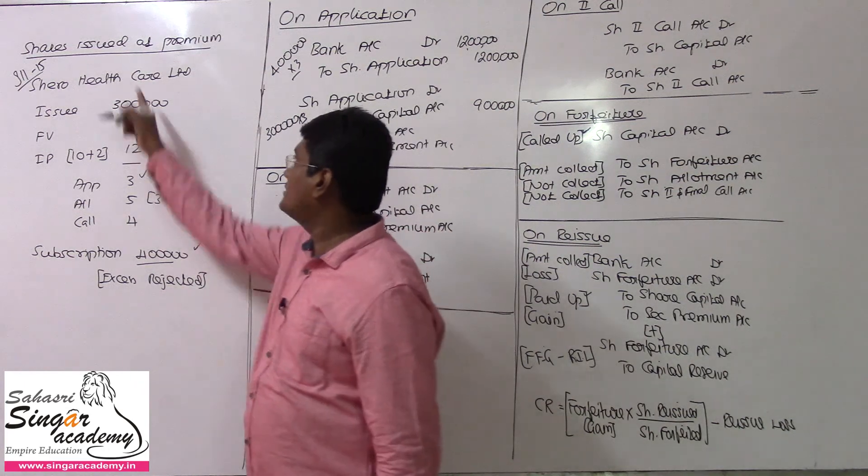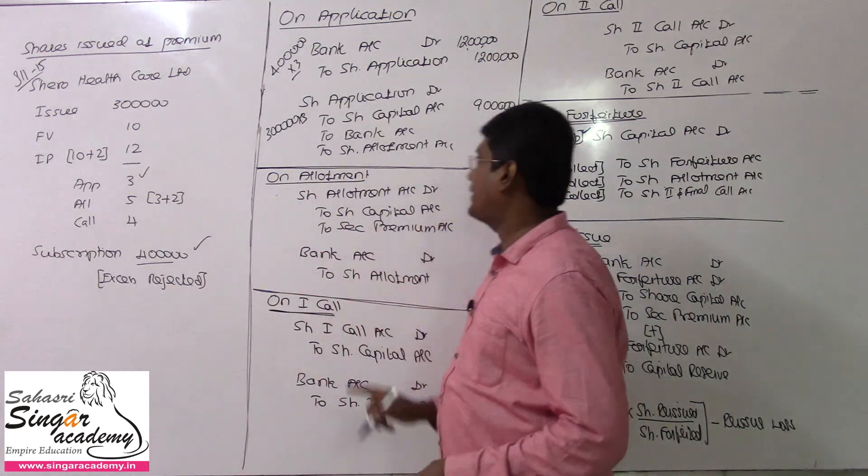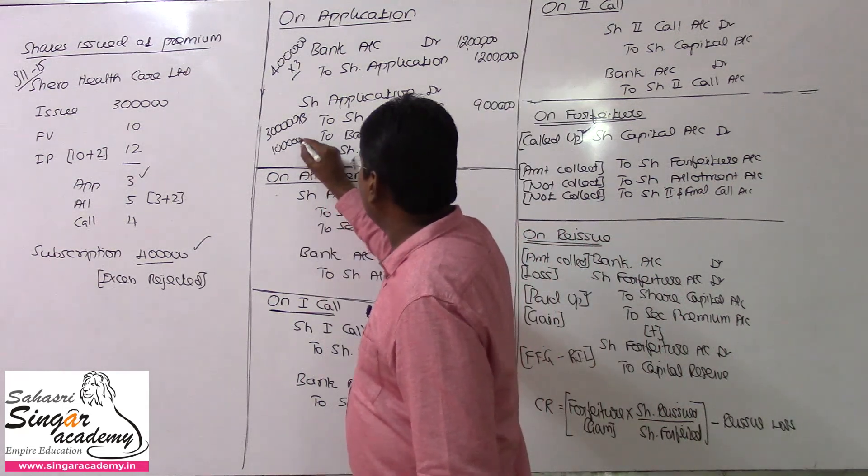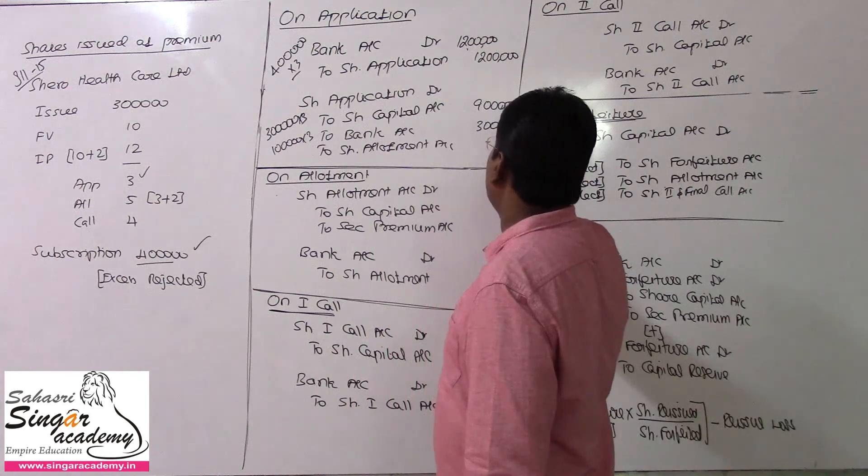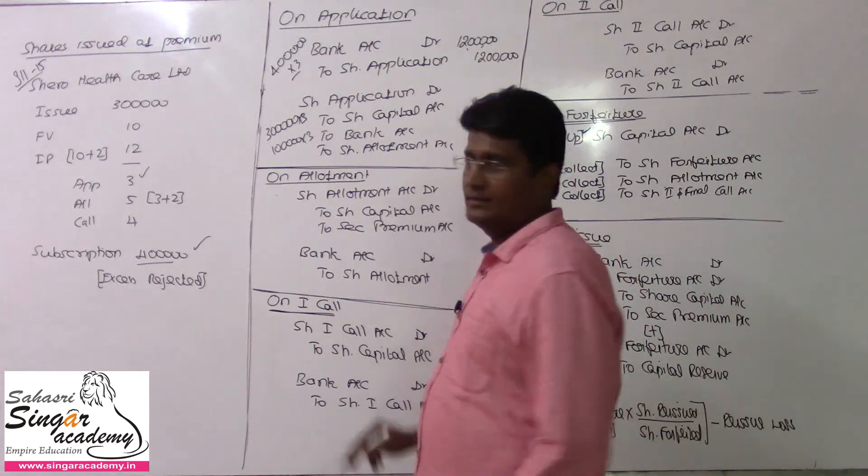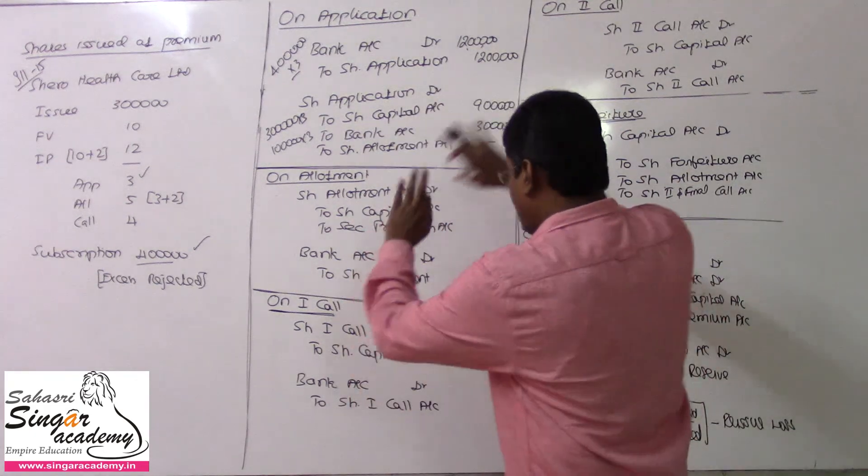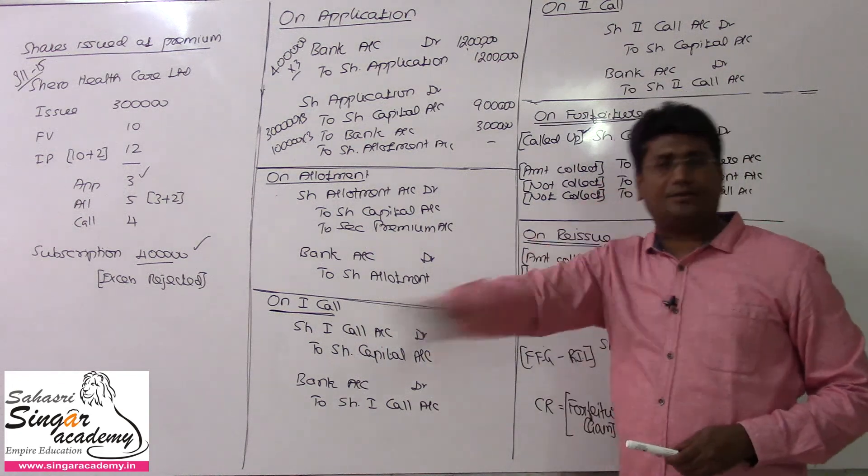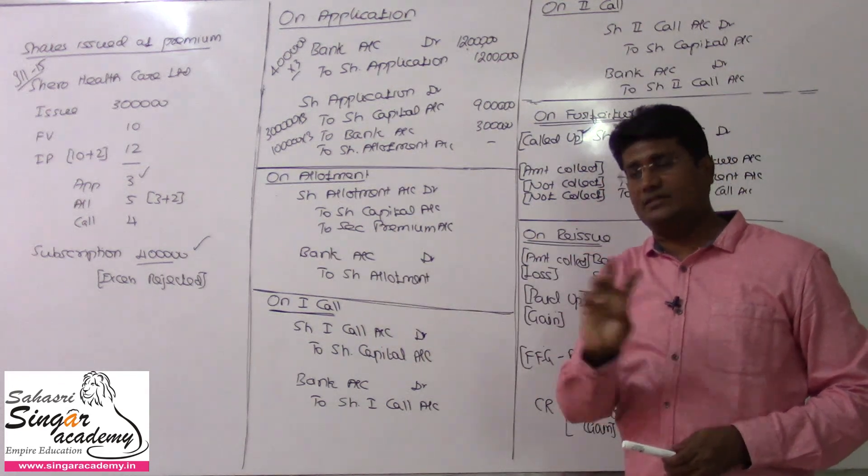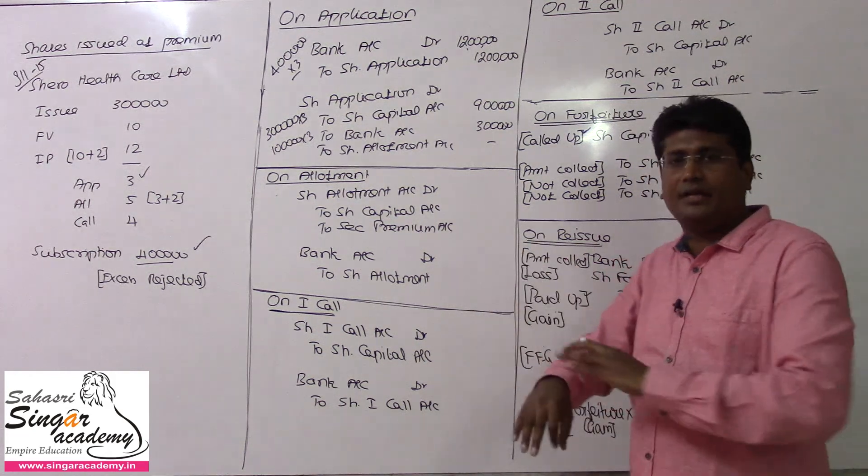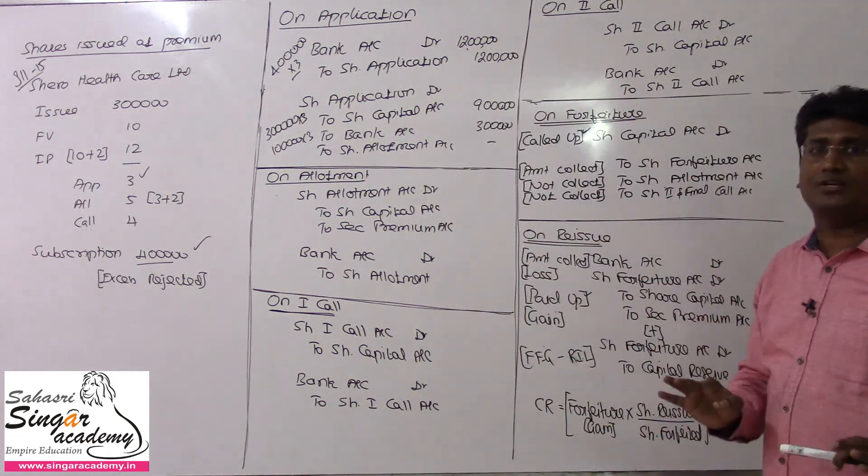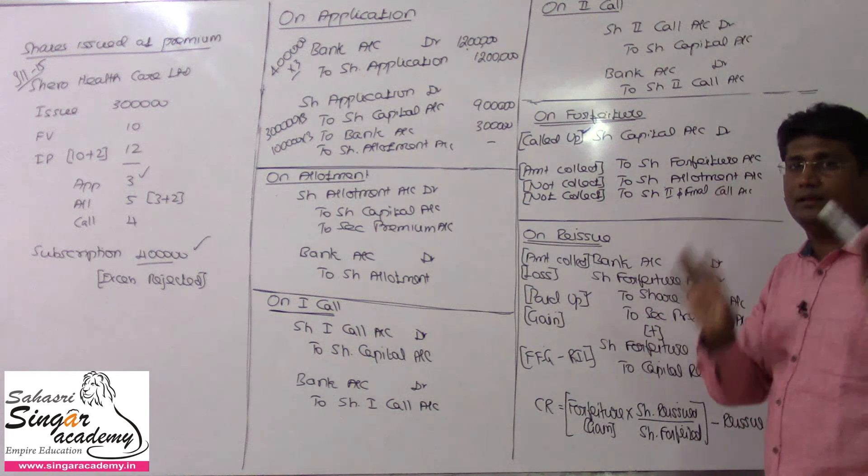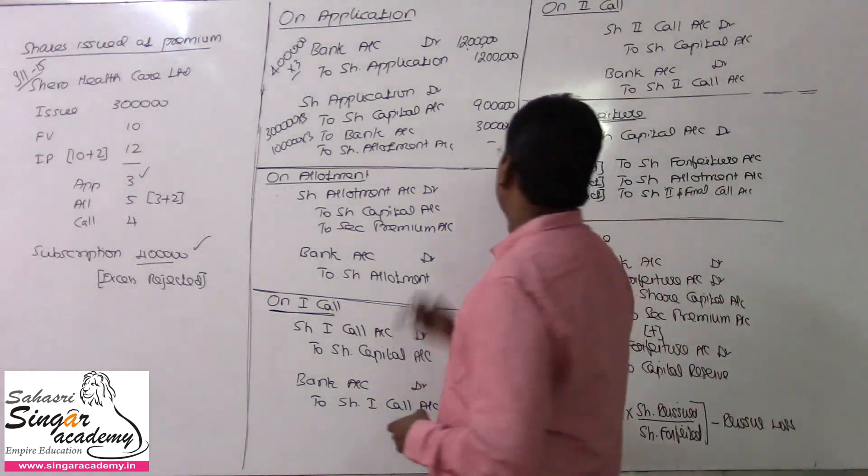The balance being rejected is 1 lakh shares. The difference between the two - 1 lakh shares application money has to be refunded, that will come here. So 1 lakh times 3 equals 3 lakhs. Is there any pro-rata to be adjusted? No. This is the complete skeleton - there are 14 entries total. Master these 14 entries except for call and advance scenarios. Understand the pattern and you can fit any answer.